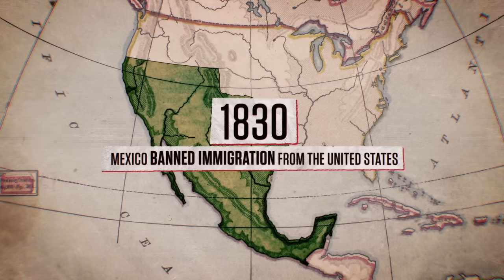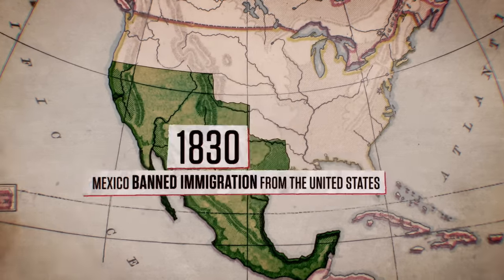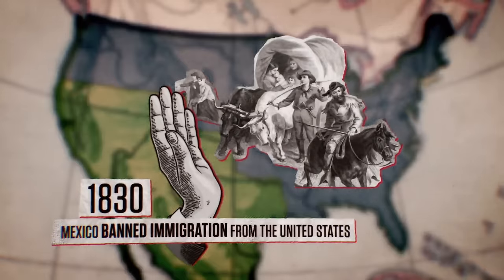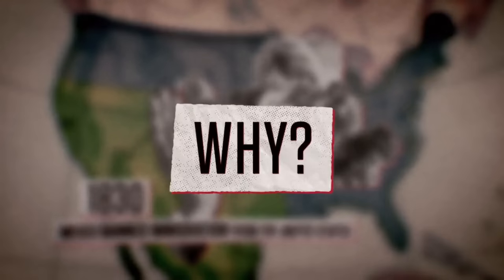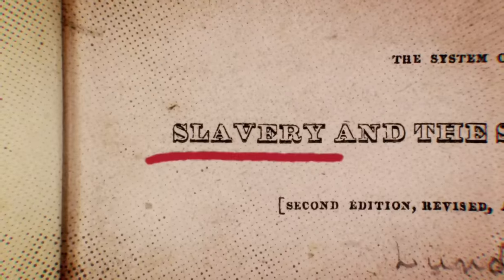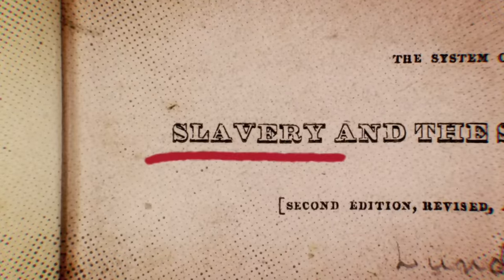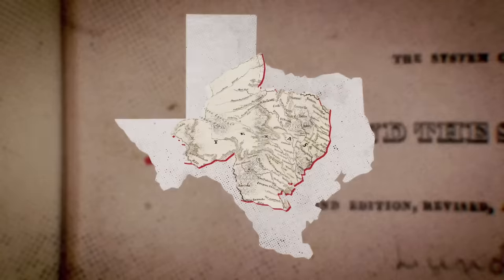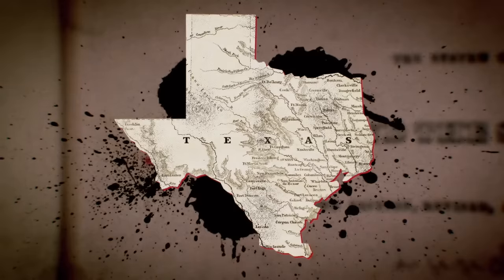In 1830, Mexico banned immigration from the United States. Why? Well, one reason: slavery. But for the whole picture, we have to look to the history of Texas.